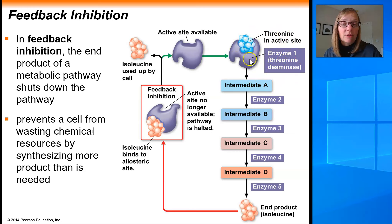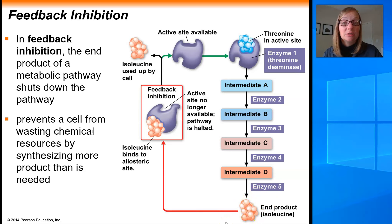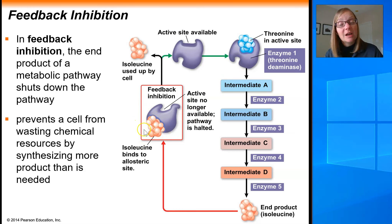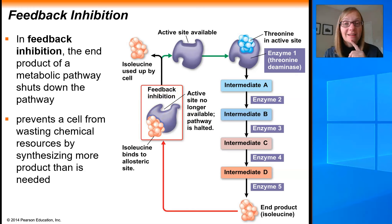Threonine deaminase grabs the threonine and starts the conversion process that eventually leads to the production of isoleucine. The cell uses this enzyme to make more and more isoleucine, but if it doesn't use up that isoleucine immediately, its concentration starts to increase. The more isoleucine you have, the more frequently it will bump into other molecules — and interestingly, isoleucine can actually bind to a little pocket on the threonine deaminase enzyme that is not the active site. When isoleucine binds to that pocket, it changes the shape of the threonine deaminase and makes the active site no longer available to accept threonine. So isoleucine is acting as an inhibitor.